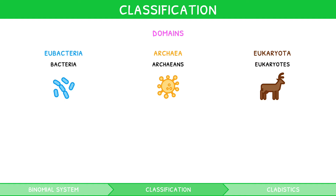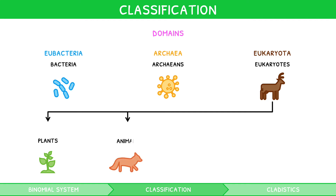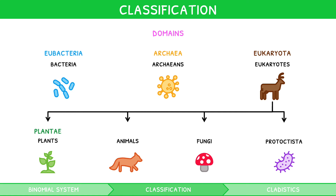For your IB Biology exam, you are expected to further recall the classification of eukaryotes into plants, animals, fungi, and protoctista. These kingdoms are called Plantae, Animalia, Fungi, and Protoctista, respectively.